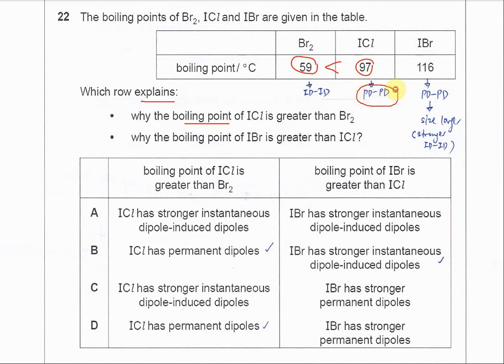So therefore we know that the intermolecular force of ICl is greater than bromine, because PD-PD is stronger than ID-ID. That's why the boiling point of ICl is greater than bromine.